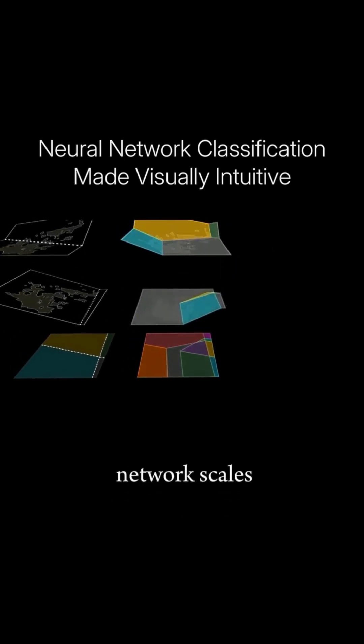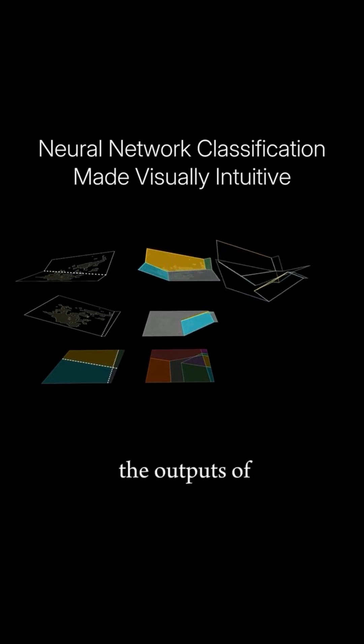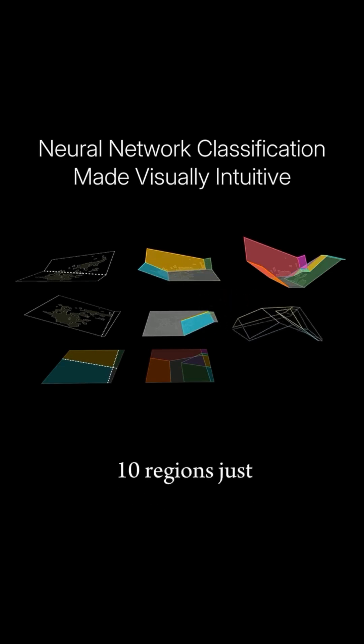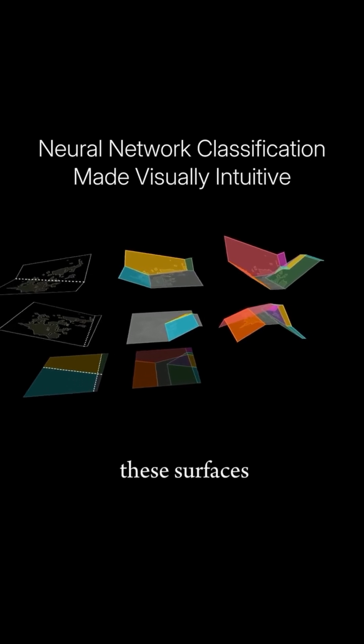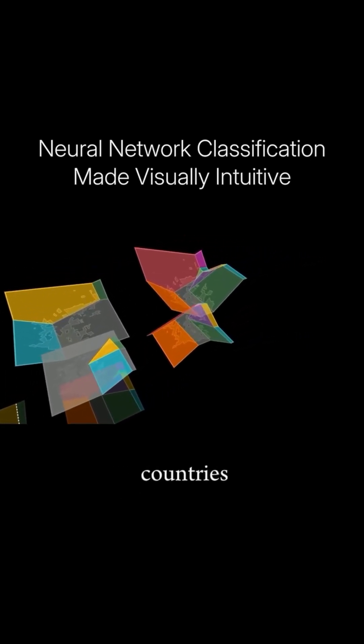When the final layer of our network scales and adds together the outputs of our second layer, the resulting surfaces are composed of the same ten regions, just with different heights. The height of these surfaces corresponds to the model's final confidence in our two countries.